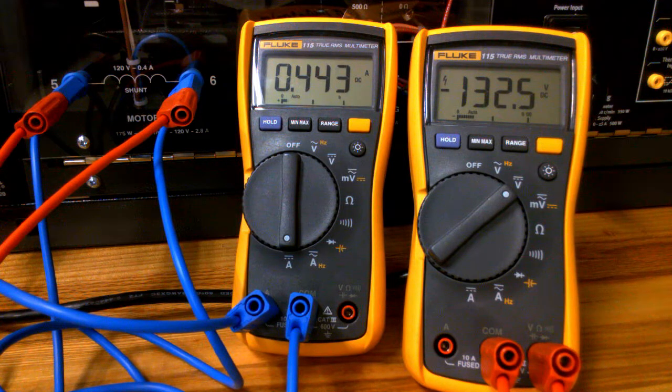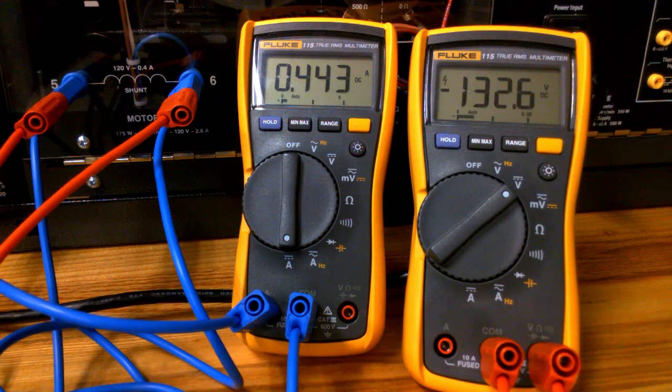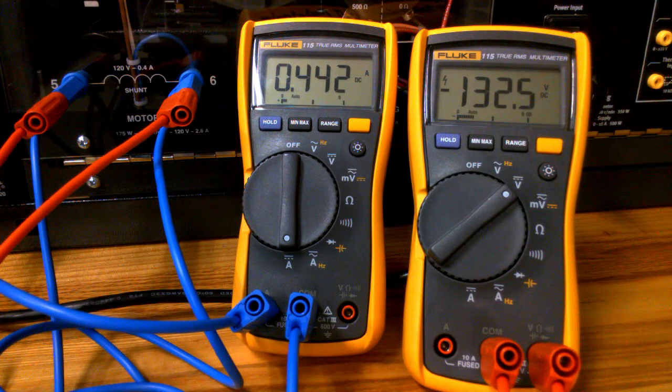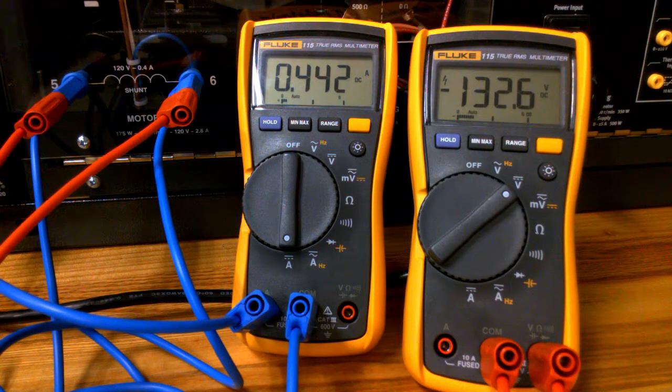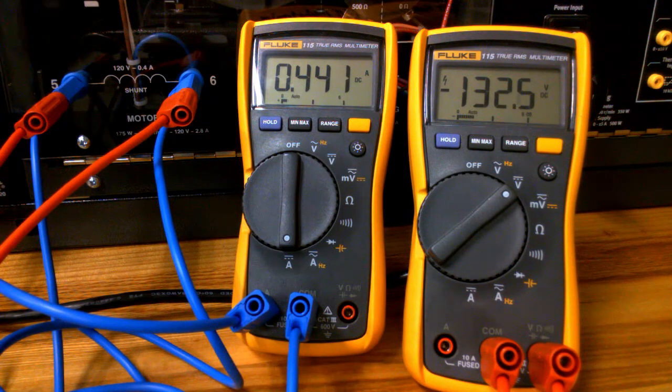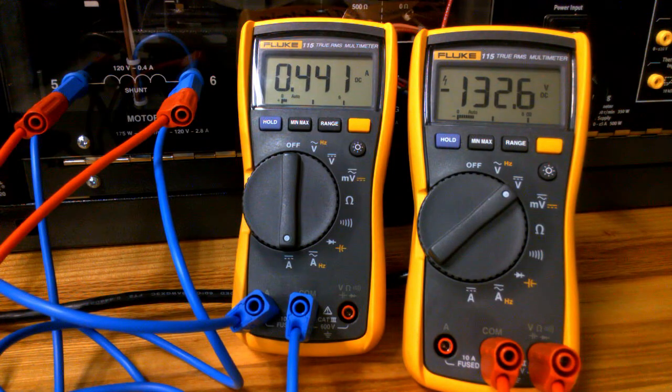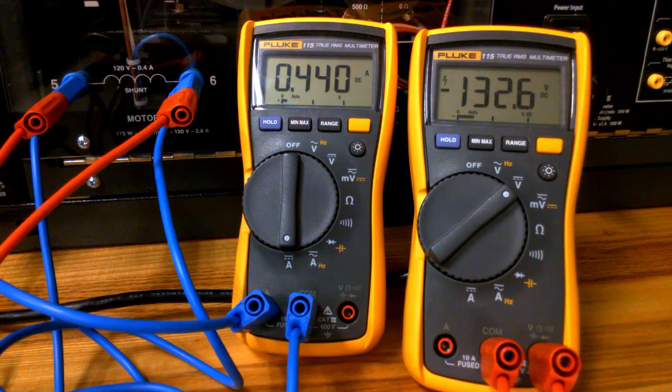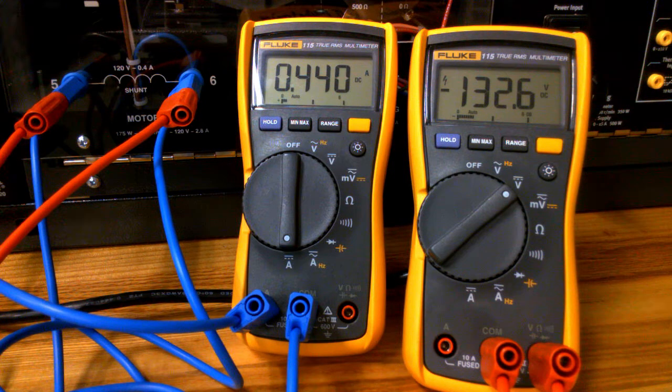Current meter in series, voltmeter in parallel. Power on. I show that a direct reading across the winding shows 132.6 volts applied, and we have 0.442 amperes flowing in the field circuit.